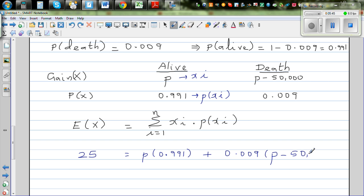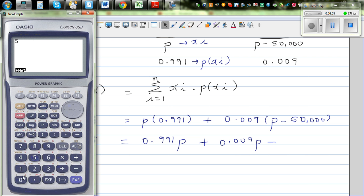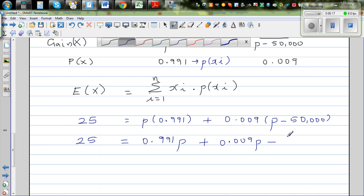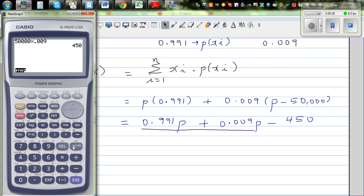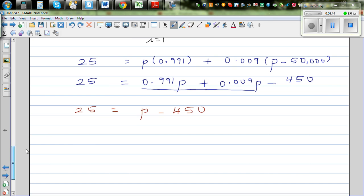Let's do algebraic manipulation. Let's expand this bracket. So this is 25 equals 0.991P plus 0.009P minus 50,000 times 0.009 which is 450. So this is minus 450. If we add this will be nothing but 1P, because 0.991 plus 0.009 is 1. So this is 25 equals P minus 450. Adding 450 to both sides, 25 plus 450 equals P. So your P is $475.